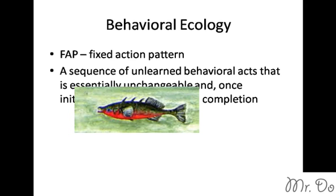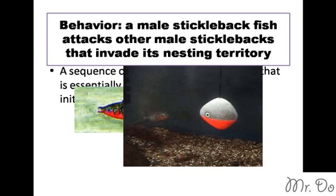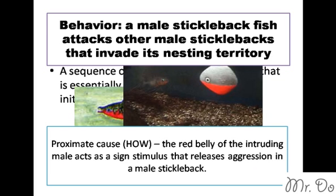For our first example, a male stickleback fish has a red underside. Whenever another male stickleback fish enters its territory, it will attack that other male. How it recognizes the other male is because the intruder also has a red underside. So basically the original male is defending its territory. The proximate cause — the how — is that the red belly of the intruding male acts as a sign stimulus that releases aggression in the resident male stickleback. Whenever another male is in the territory with a red underbelly, it causes the original male to attack.